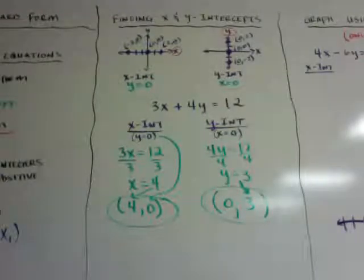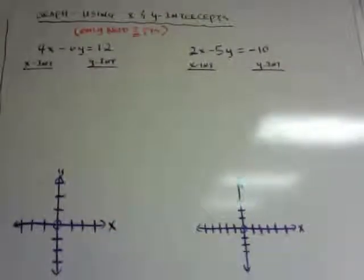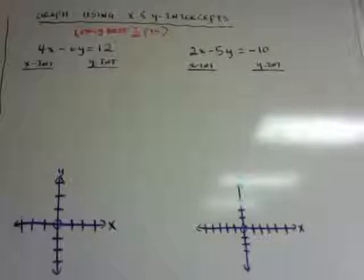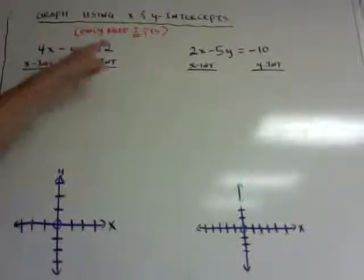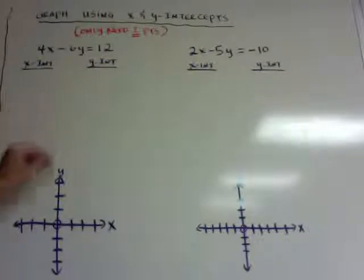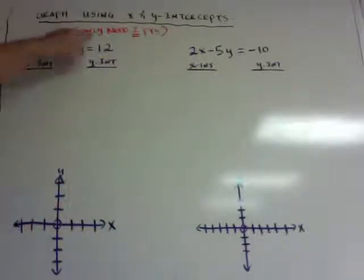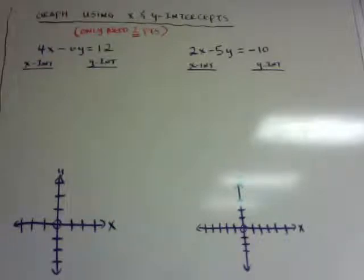That's how you find x and y intercepts. We're going to do some more, so if you didn't get it, don't worry. Now, graph these two equations using the x and y intercepts. If you remember slope intercept form, we needed to use 3 points. This time, we're going to use just 2 points — your x intercept and your y intercept — and that's all you're going to need.